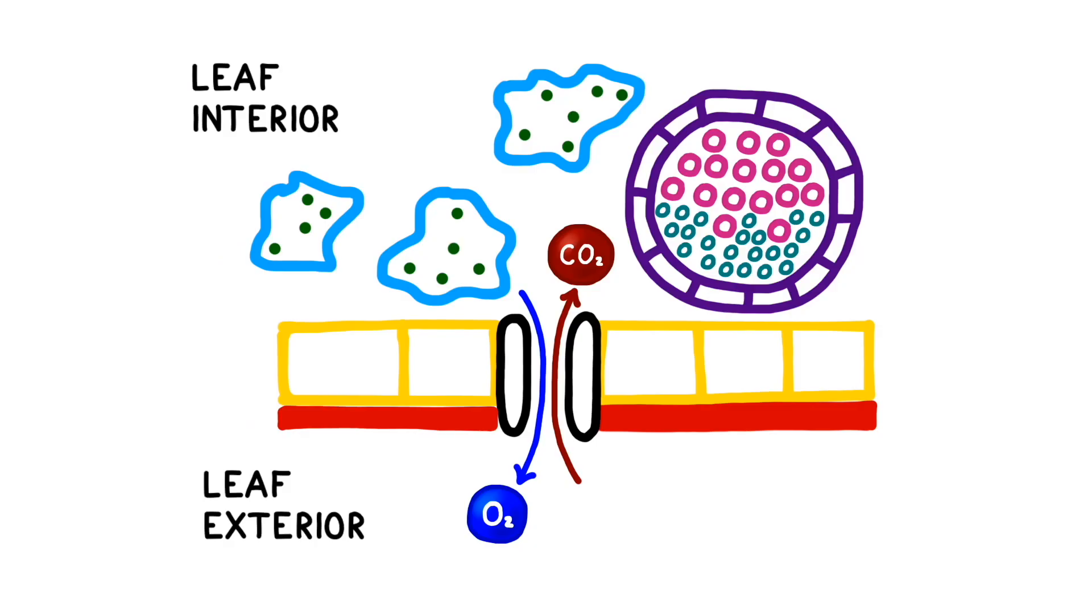For plants that live in a hot environment, this is a delicate balancing act. They need to keep their stomata open enough of the time to get carbon dioxide in, but not so often that they allow themselves to dry out.